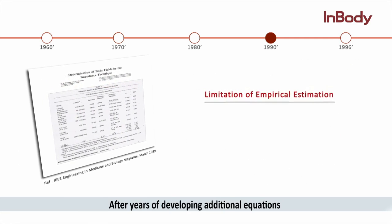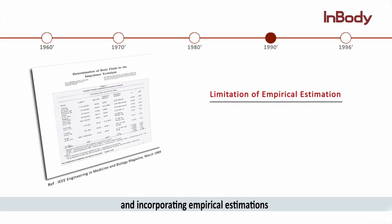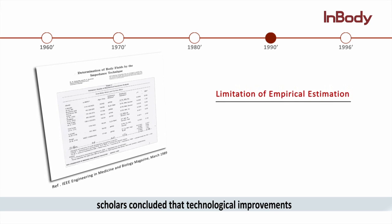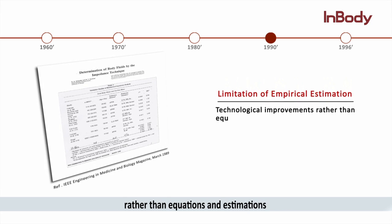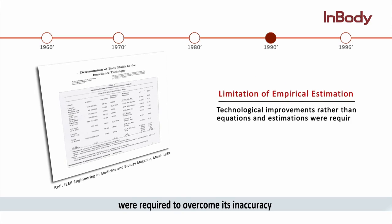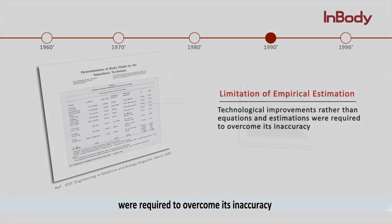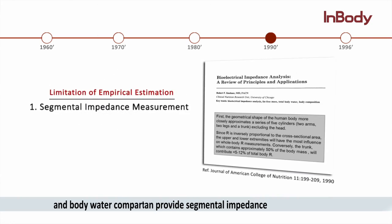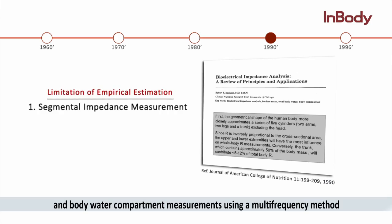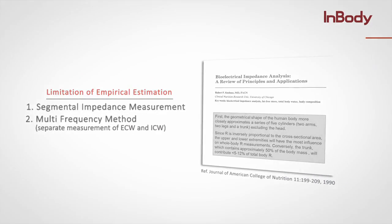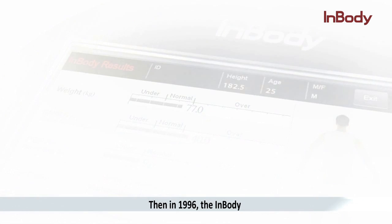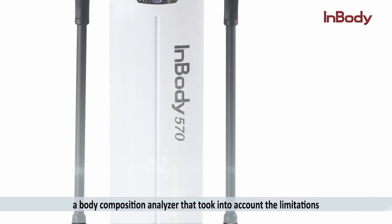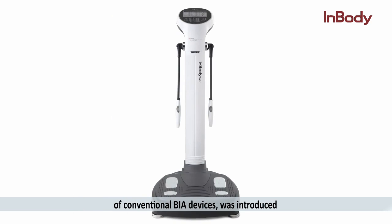After years of developing additional equations and incorporating empirical estimations, scholars concluded that technological improvements — rather than equations and estimations — were required to overcome the inaccuracy. BIA required technology that could provide segmental impedance and body water compartment measurements using a multi-frequency method. Then in 1996, the InBody, a body composition analyzer that took into account the limitations of conventional BIA devices, was introduced.